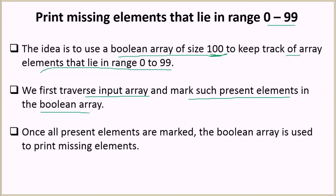We are going to iterate over the whole array and mark whatever element we encounter as present inside this boolean array. Once all the present elements are marked, once we are done with traversing the array and marking all those elements in the boolean array, then we will use the boolean array to print the missing numbers.